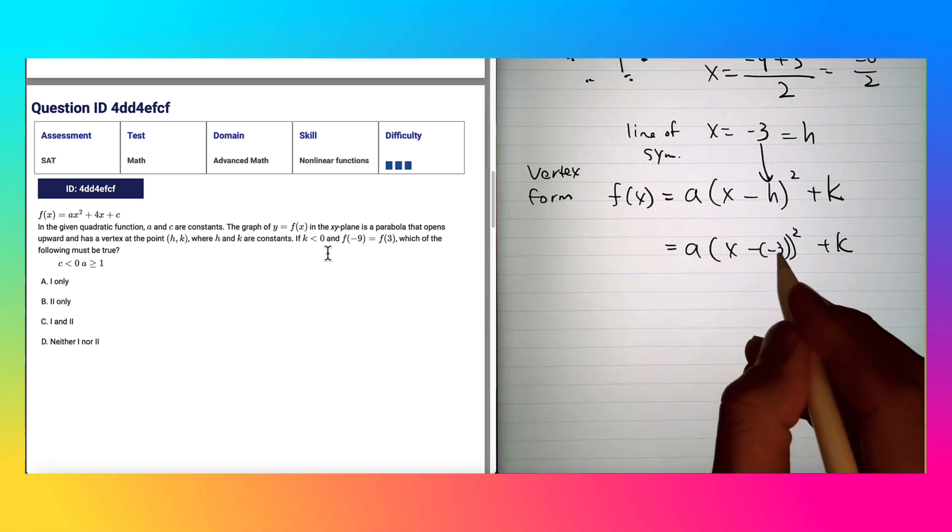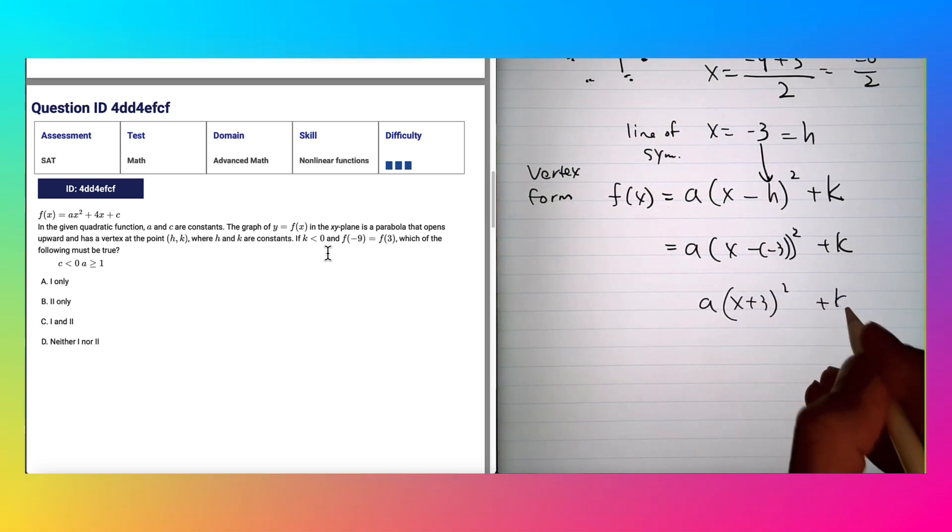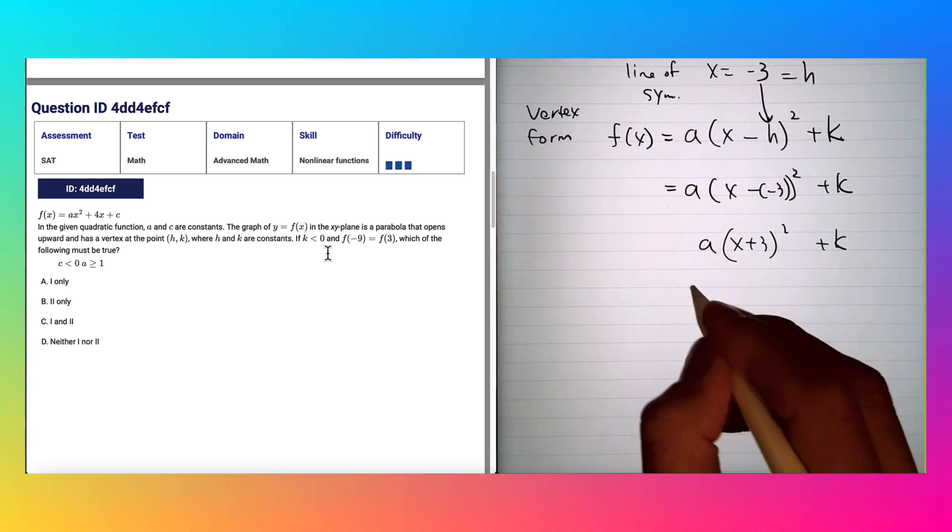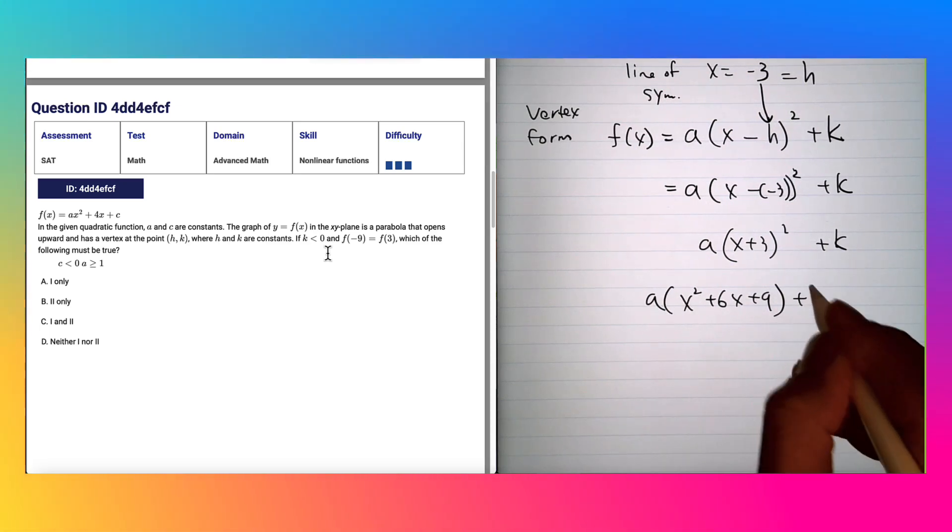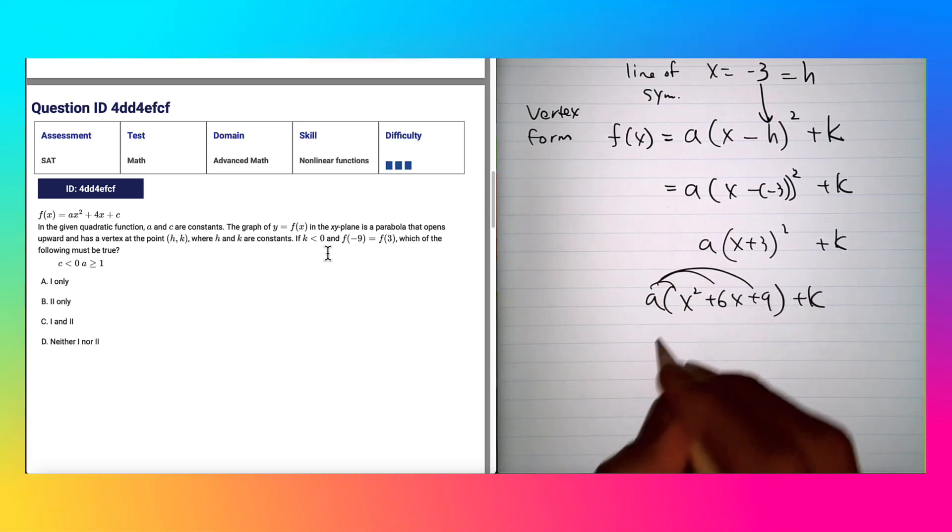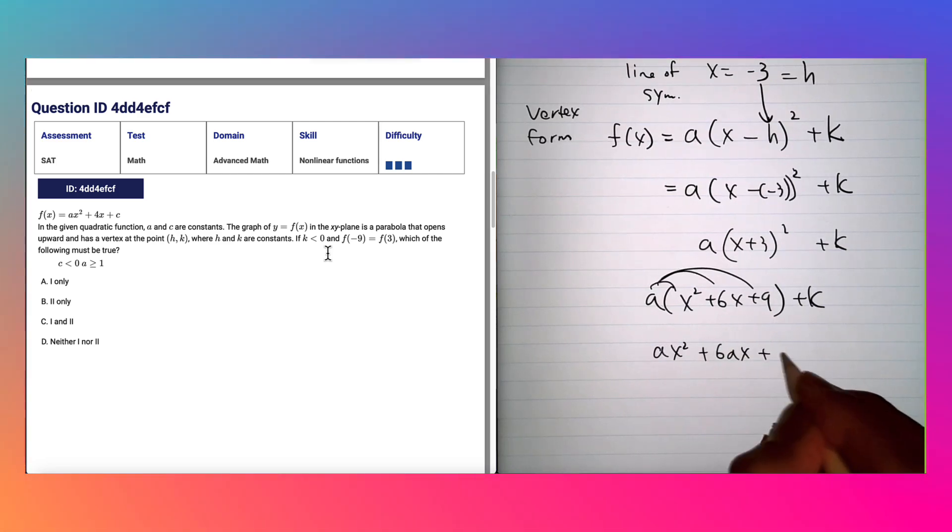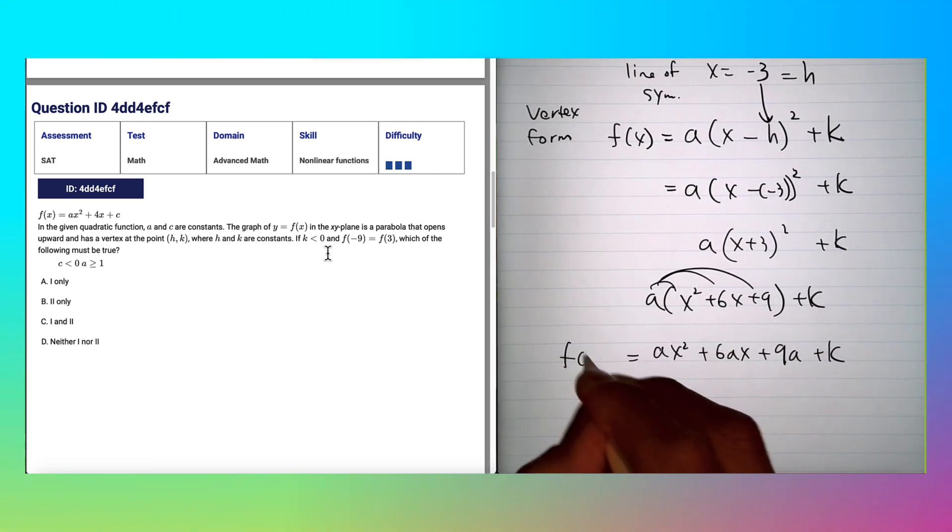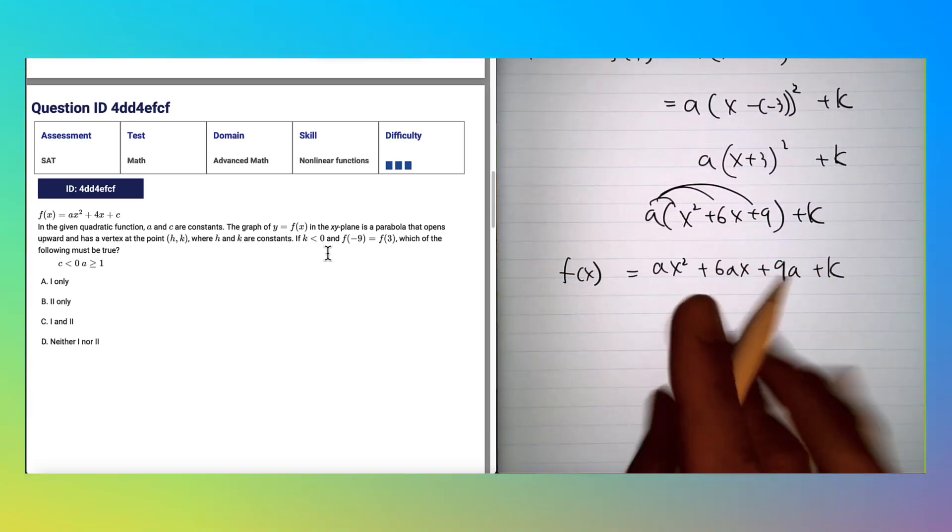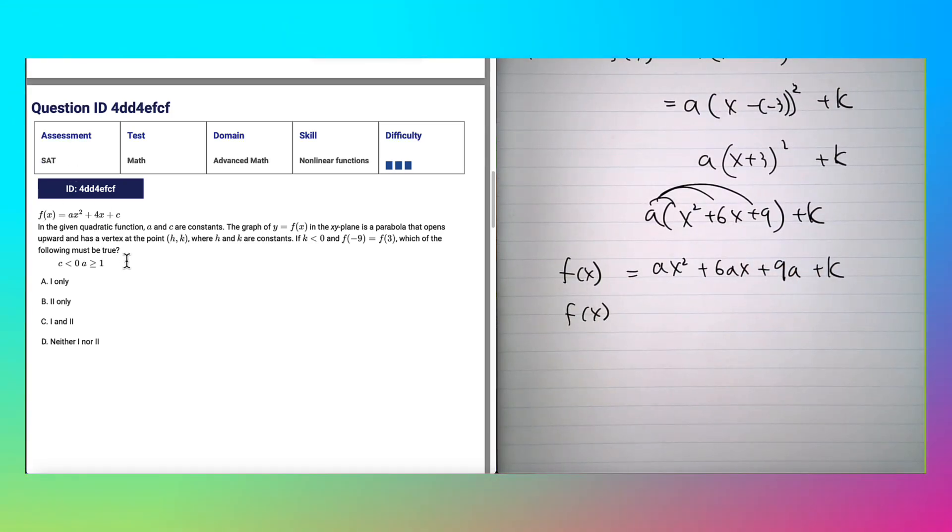x - (-3) is x + 3. And (x + 3)(x + 3) will give you x² + 6x + 9. And then when you distribute all this, you see some parts of the given f(x) match.